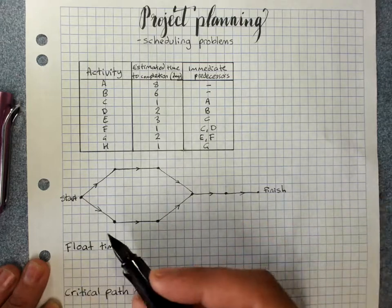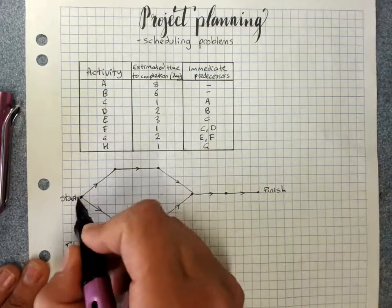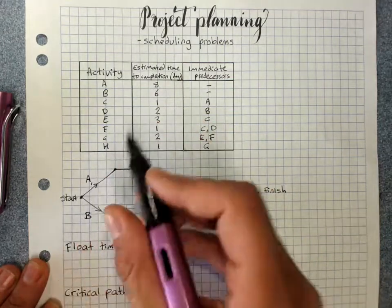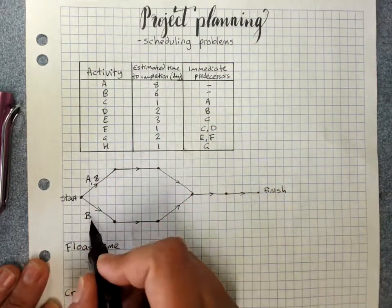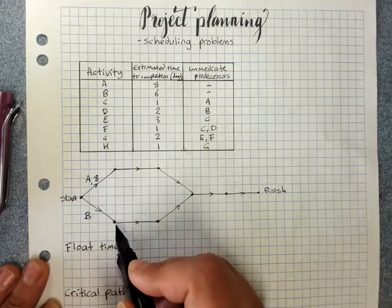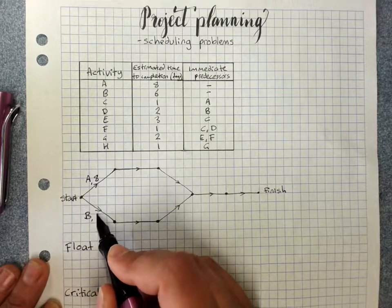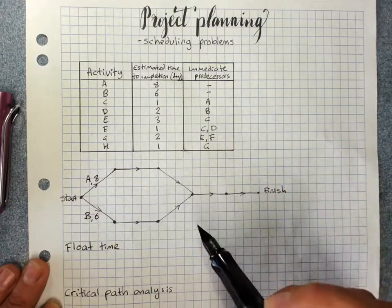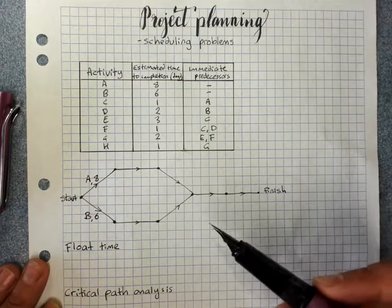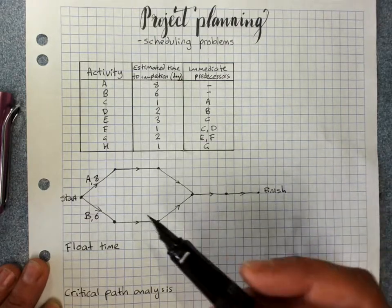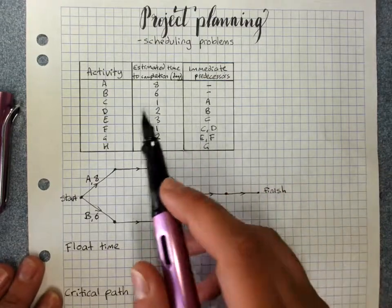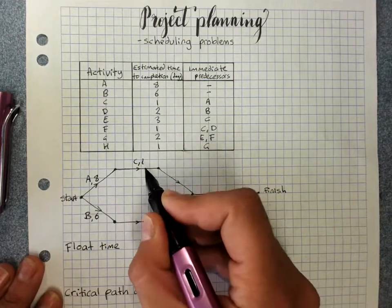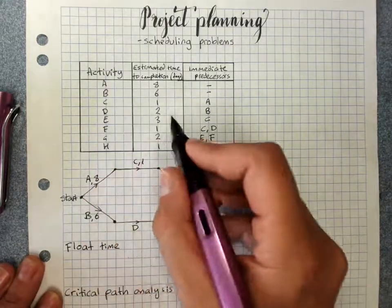We've done this, but it's good just to see it over and over again. So activity A, we're going to start with activity A and B because they have no immediate predecessors. Then you put a comma and their weighting. We've got to label our edges or arcs with both the activity and its time. Now C required A, so we've got C, 1. D required B and D's cost is 2.